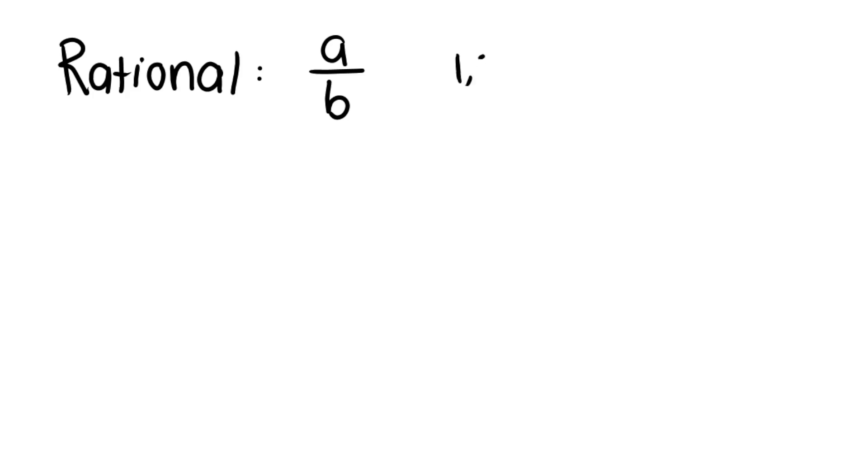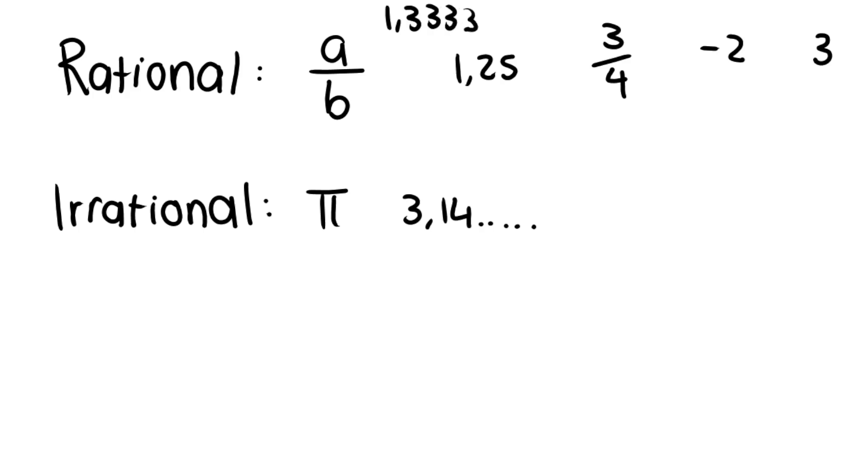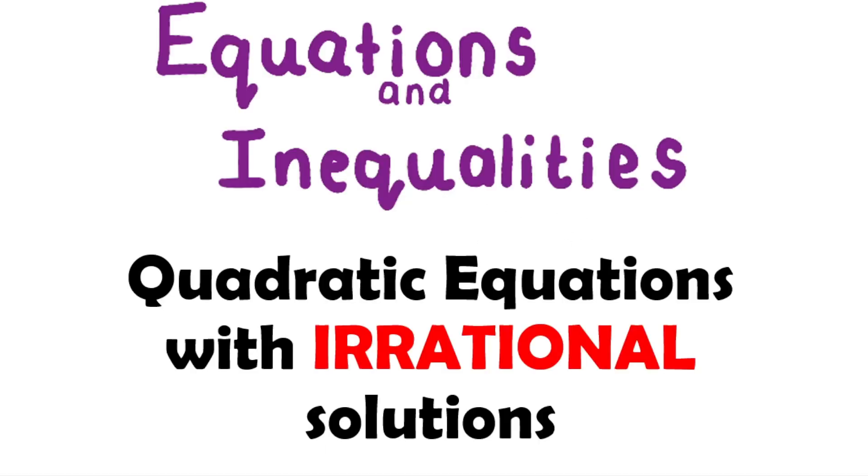Rational numbers include decimals that stop like 1.25, fractions like 3 over 4, and numbers like negative 2 or 3. Today, we're going to discuss quadratic equations where our solutions are irrational. The most famous irrational number is pi, which converts to 3.14 and goes on and on. Irrational numbers have random repeating decimals, unlike rational numbers such as 1.3333 which have a pattern.